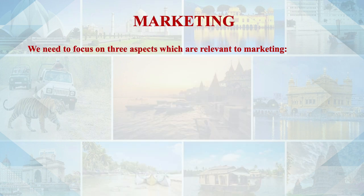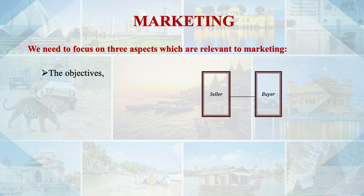First, let's recapitulate about marketing and what is our understanding of what is meant by marketing. Marketing means designing an organization's product in terms of the needs and desires of the targeted market and then using effective means of promotion, distribution and service. We need to focus on three aspects relevant to marketing: the objectives, the exchange process, and the customer.